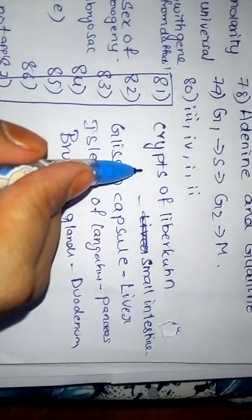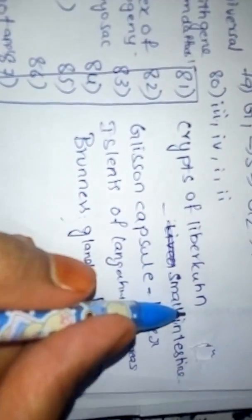I have done matching here. Crypts of Lieberkühn small intestine, Glisson's capsule liver. Islets of Langerhans pancreas and Brunner's gland duodenum. 81.